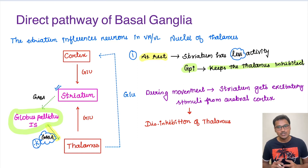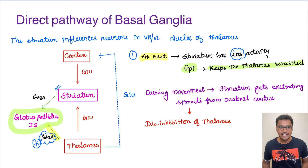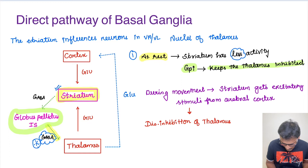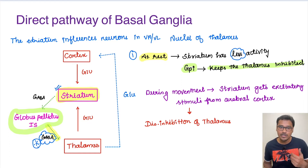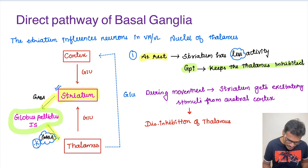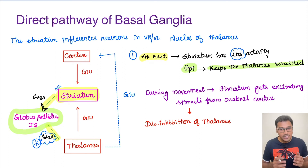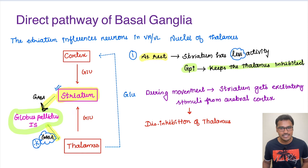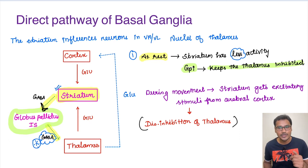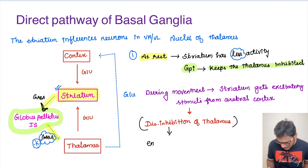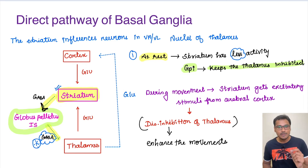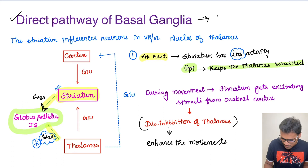Now let us see what happens during a movement. Whenever the person is doing any movement, influences from the cortex as well as from the thalamus are both going to charge the striatum. As the striatum receives more input, it is going to strongly inhibit the globus pallidus internus. When GPi itself is inhibited, it can no longer inhibit the thalamus — this is called disinhibition of the thalamus. This disinhibition enhances movements. So the direct pathway, when activated, stimulates and increases movement.